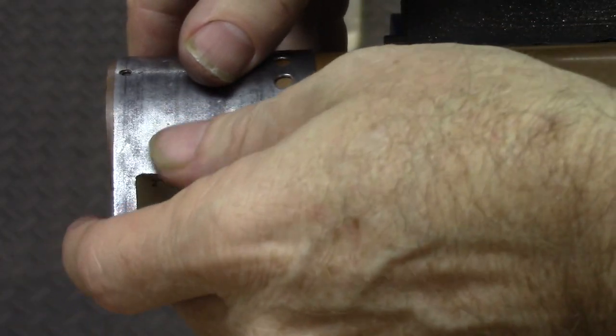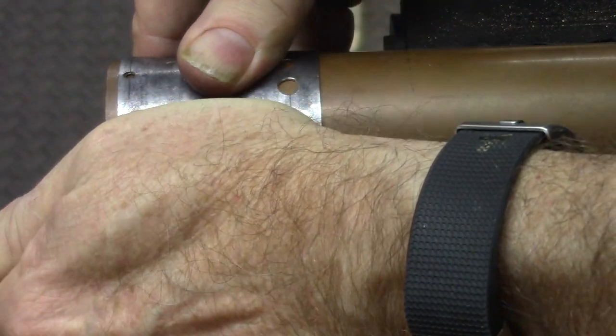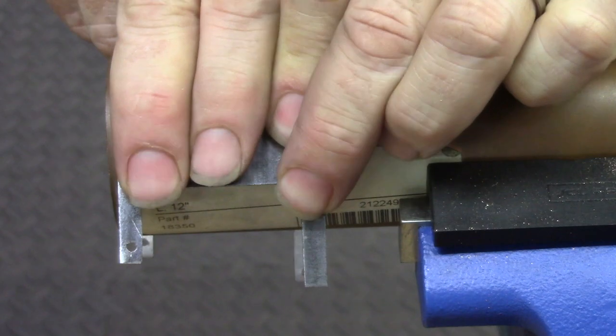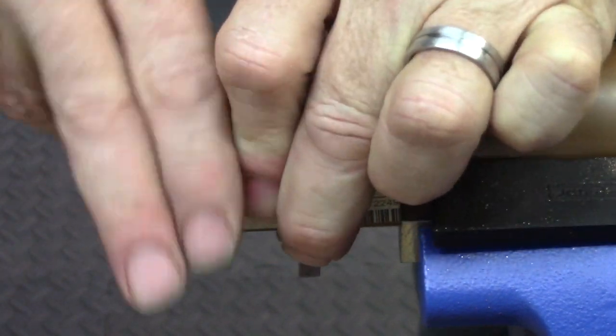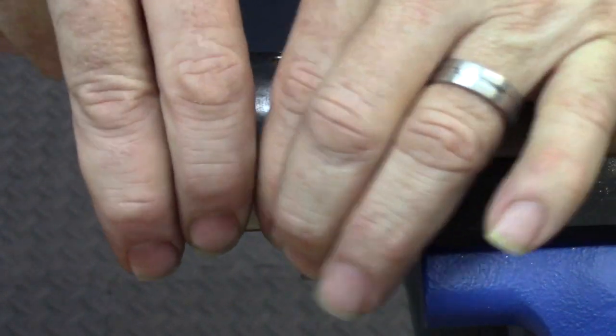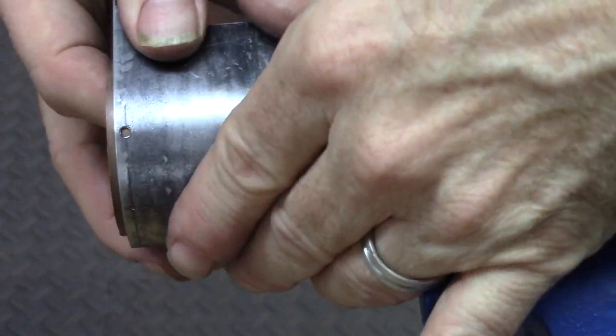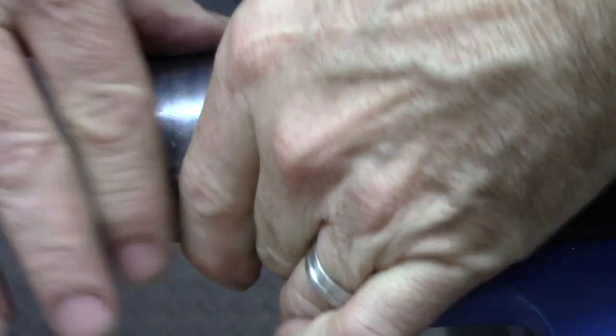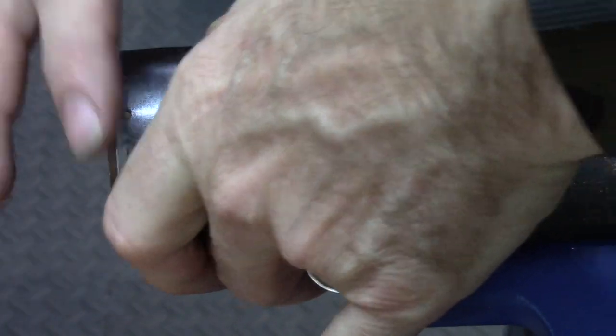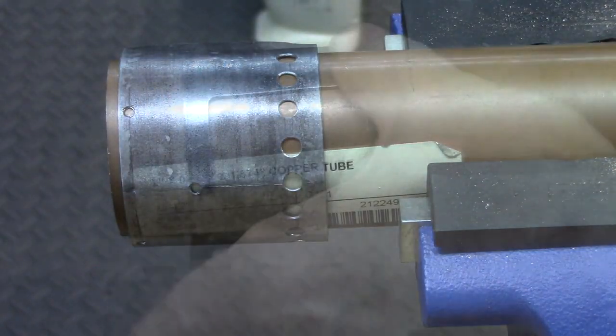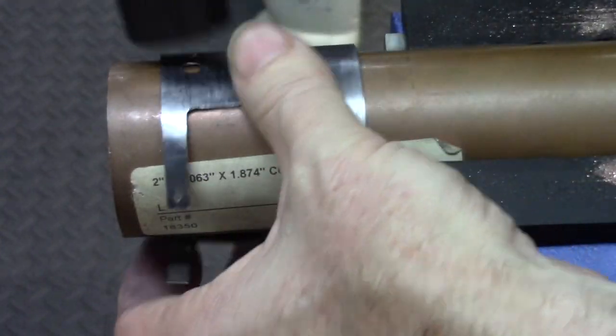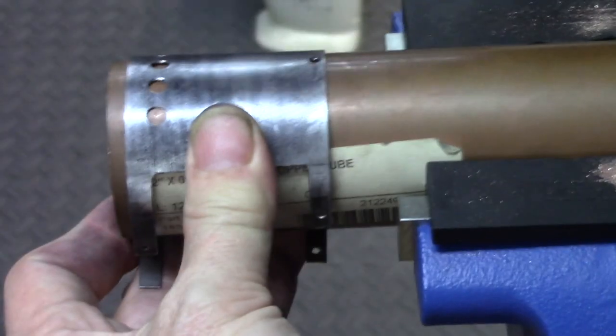The firebox will be attached to the base of the boiler, so it is bent to shape over the copper tubing originally used to construct the boiler. With a little light persuasion from a soft-faced hammer, the firebox conforms to the correct diameter for the boiler.